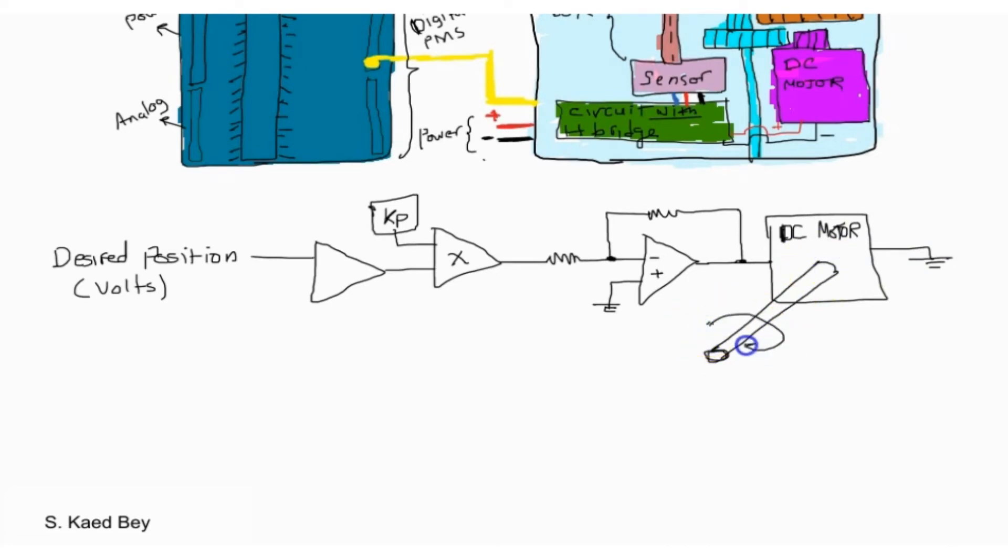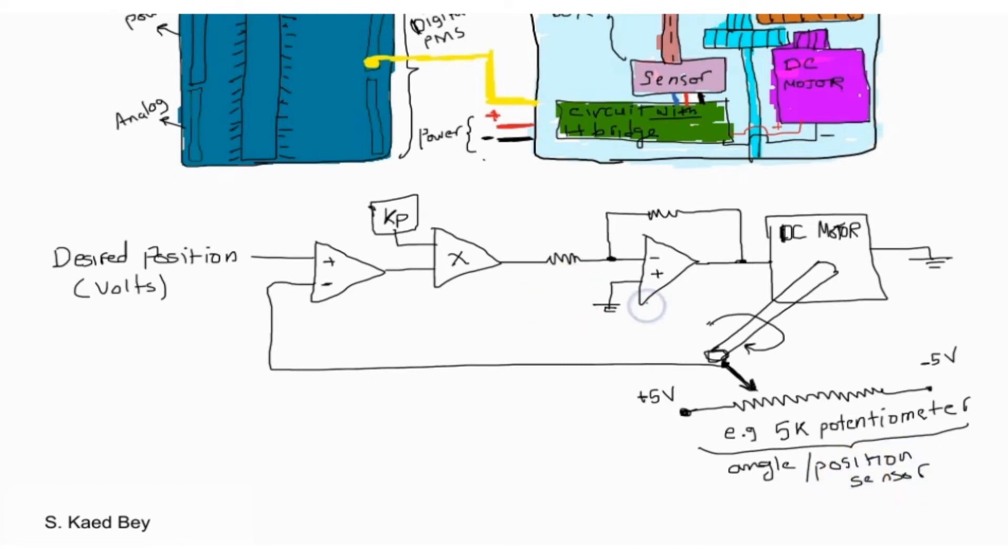The shaft of the DC motor is connected to the sensor which is a potentiometer in this case. As the DC motor shaft rotates, the potentiometer arm will rotate outputting a certain position. Normally a PID controller is involved rather than a simple gain KP. Please note that the inverting op-amp used could be the LM675 from Texas Instruments. The LM675 is capable of delivering output currents in excess of 3 amps.